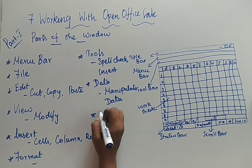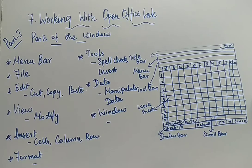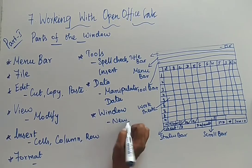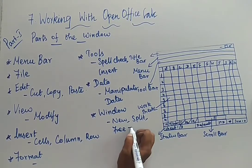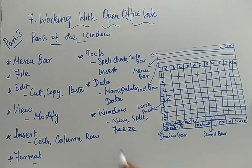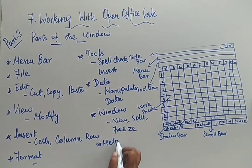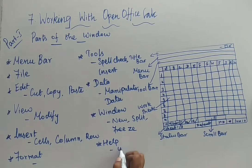Next you are having the Window menu. By means of this, you can have a new window, split the window, and freeze the window. Everything can be done by the commands available under this Window menu. And last you are going to have the next one — it is your Help. By means of this, you can have the inbuilt help features available in OpenOffice.